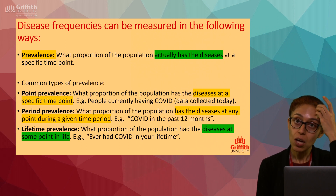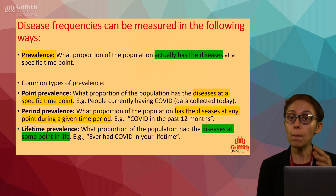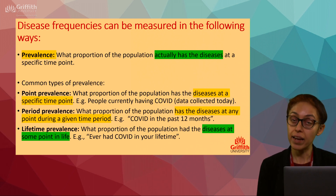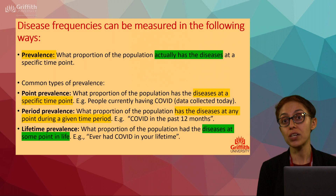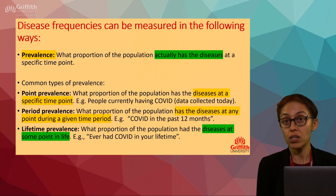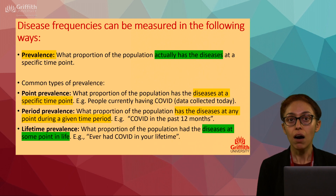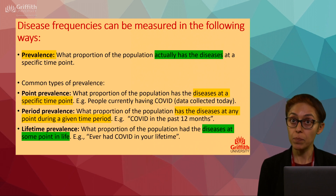Lifetime prevalence is what proportion of the population had the disease at some point in their life. For example, 'have you ever had COVID in your lifetime?' — this is the sort of question we may ask people in 2030 or beyond. So those are the three types: point prevalence, period prevalence, and lifetime prevalence.